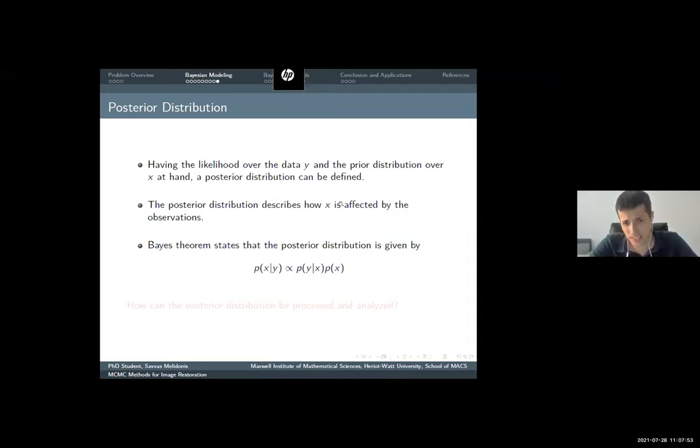Having the likelihood of the data and the prior distribution defined, we can easily calculate the posterior, which describes how x is affected by the observations. Bayes' theorem gives us the result. This is the posterior, the likelihood multiplied by the prior is proportional. The question now is how this posterior distribution can help us, how it can be processed or analyzed.